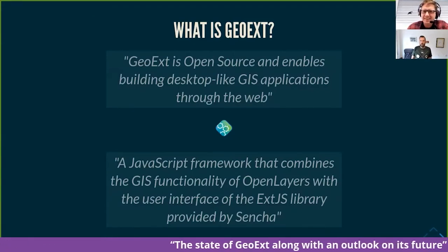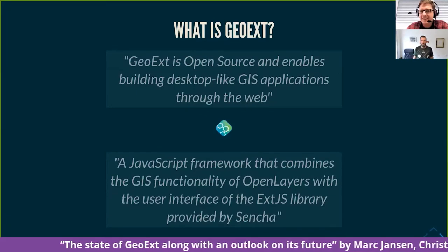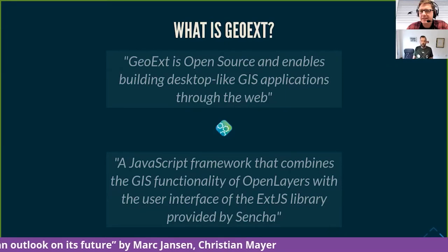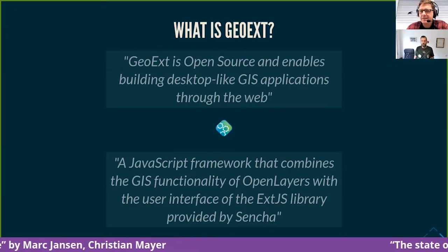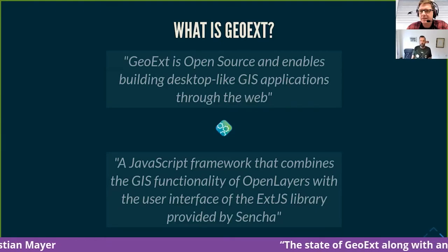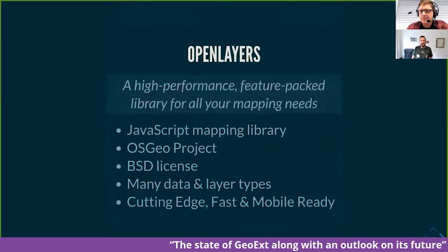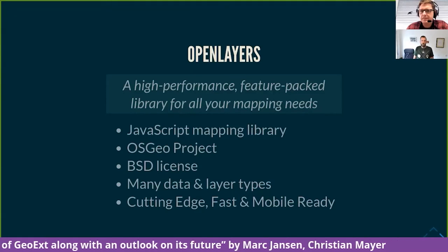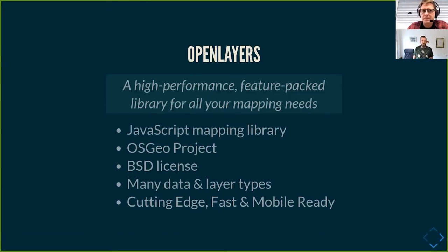GeoExt is an open source project which enables the building of desktop-like GIS applications through the web. It combines the GIS functionality of OpenLayers with the user interface capabilities of the ExtJS JavaScript library provided by Sencha. OpenLayers, the first base library, is a high-performance, feature-packed library for all your mapping needs — often called the Swiss Army knife for JavaScript mapping. It's an OSGeo project under BSD license, supporting many data types, layer types, custom controls, and interactions.